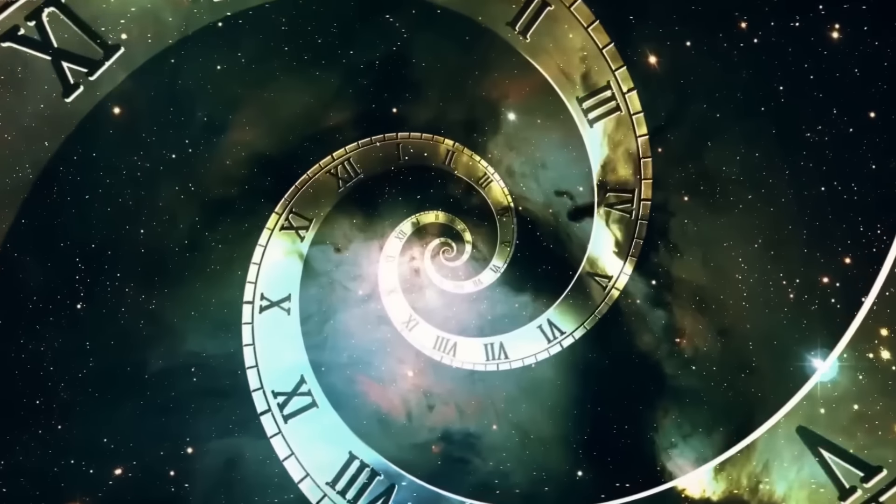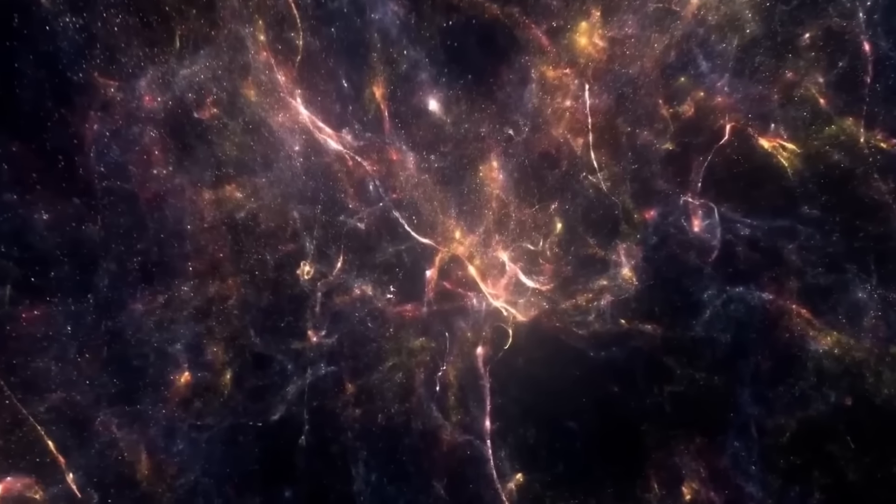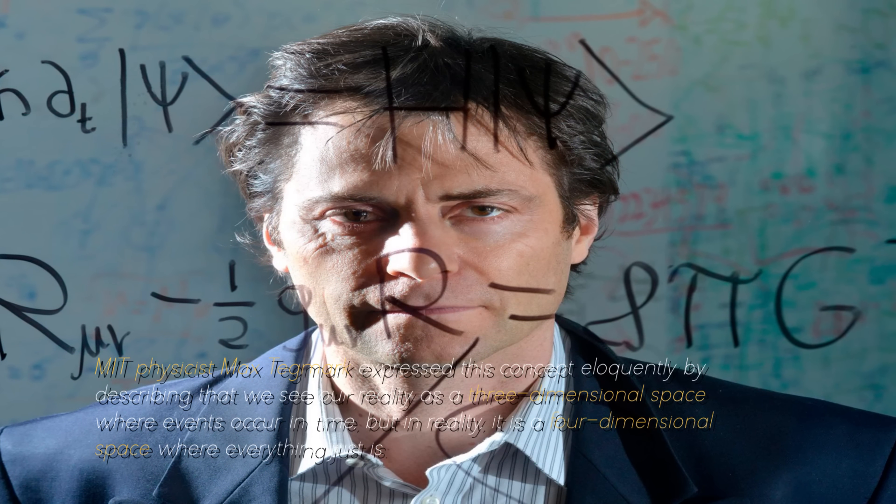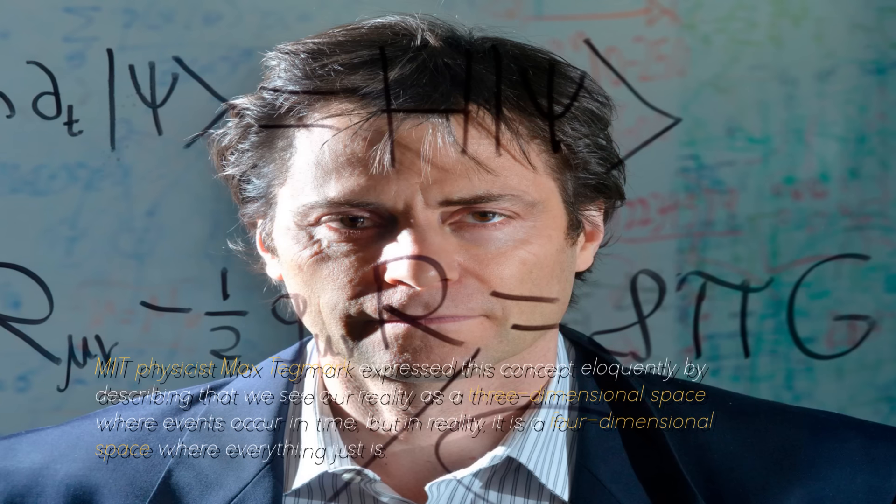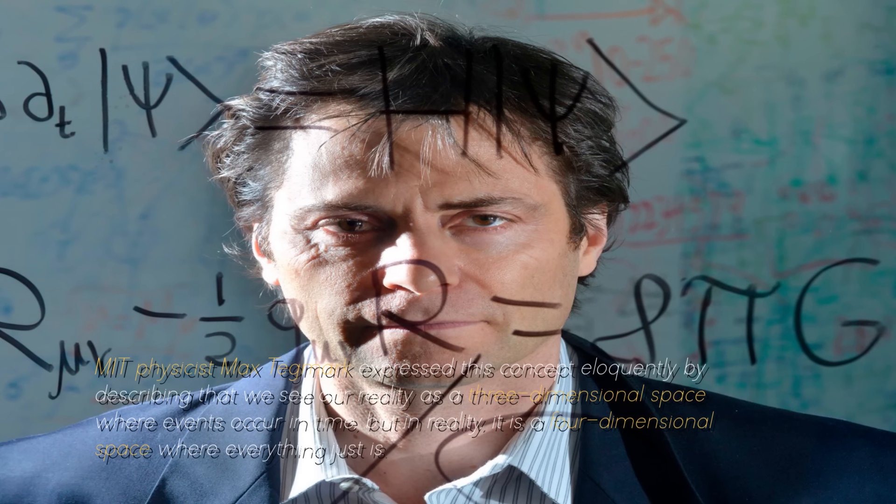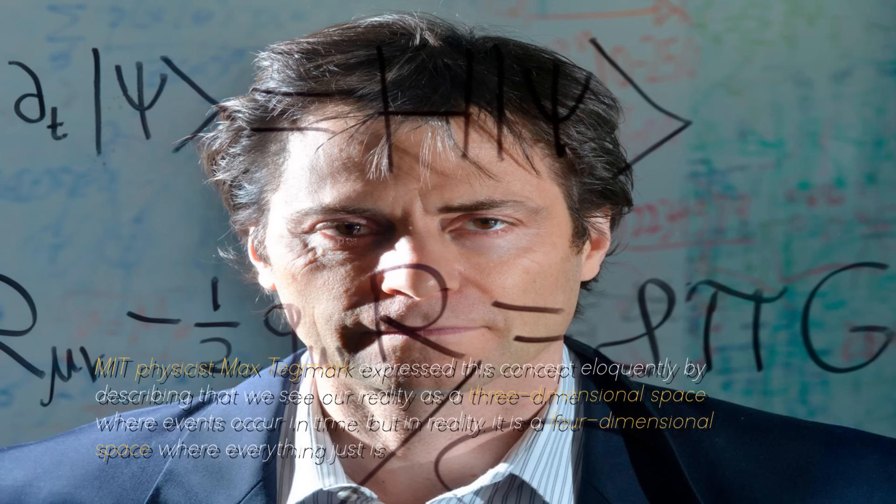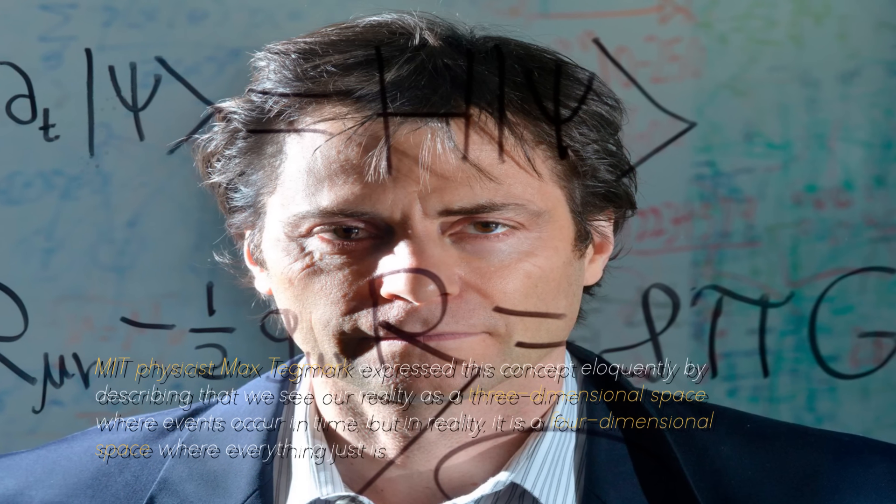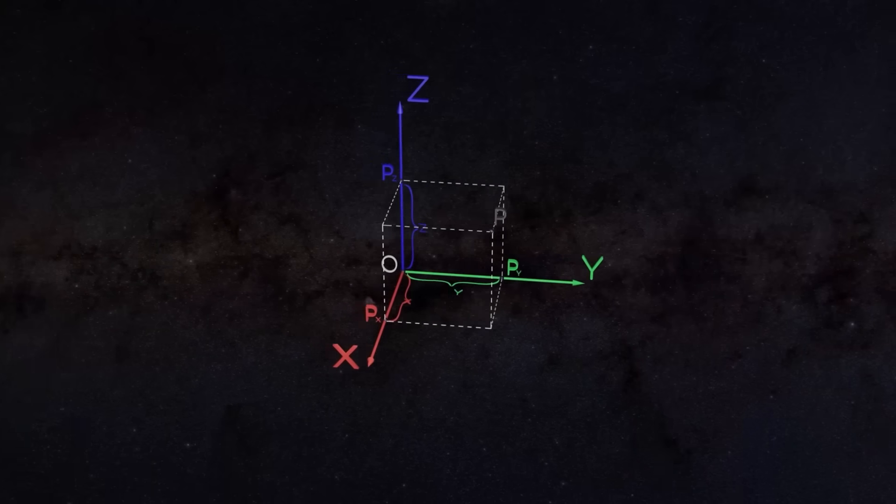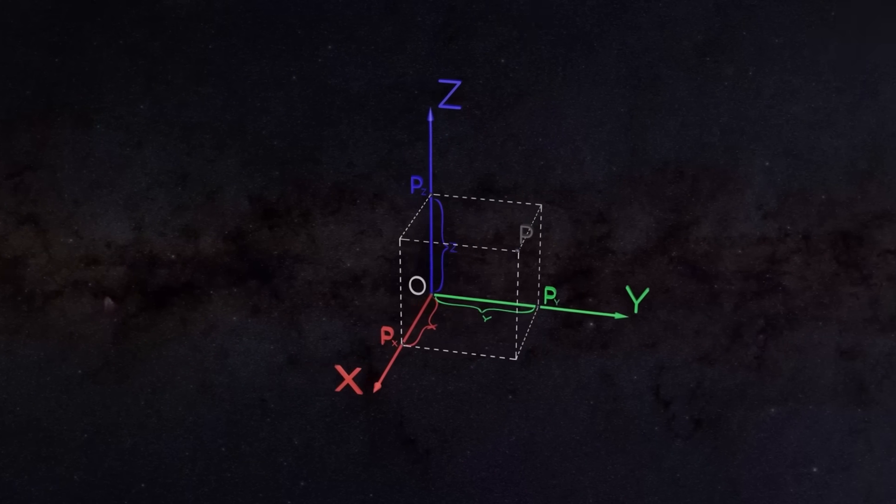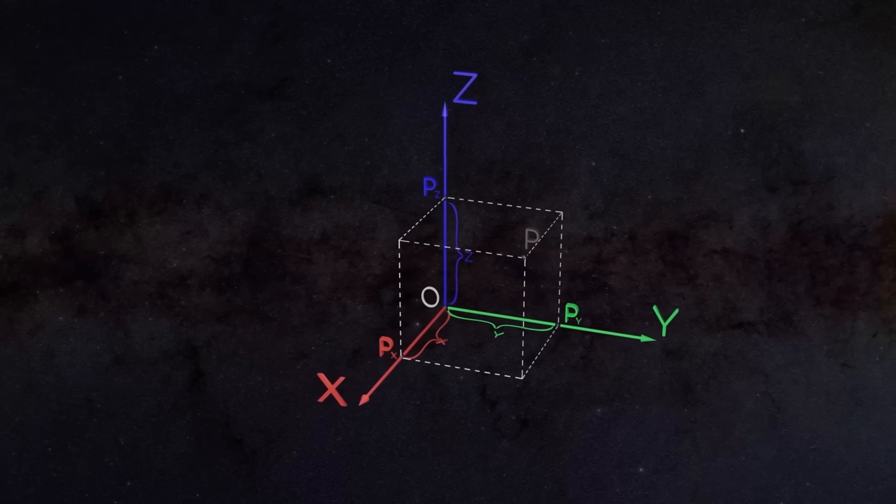So what does this imply for us? In essence, it suggests that everything has a reality as solid as the present moment, and that the past and the future exist somehow somewhere in space-time. MIT physicist Max Tegmark expressed this concept eloquently by describing that we see our reality as a three-dimensional space where events occur in time, but in reality it is a four-dimensional space where everything just is. If this approach were true, then time would be revealed as an illusion, since nothing would undergo real change. Past, present, and future would coexist constantly.